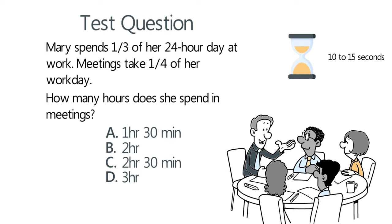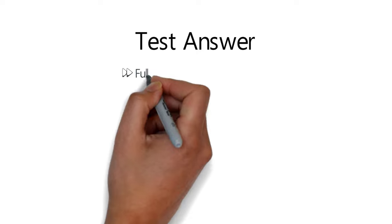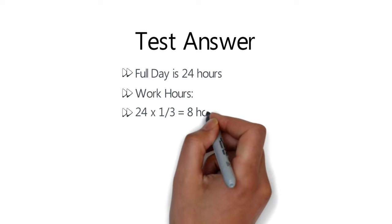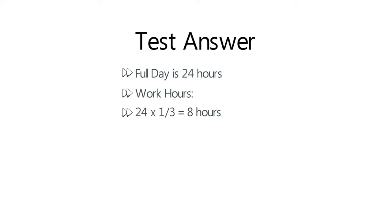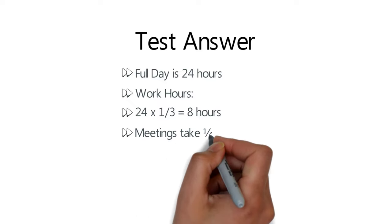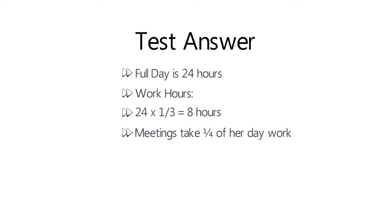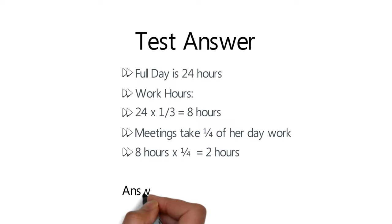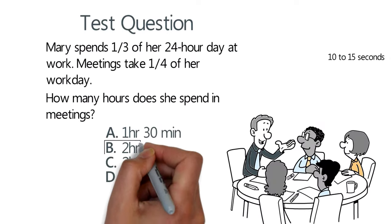A full day has 24 hours. Mary's working hours are one-third of that: 24 ÷ 3 = 8 hours. Meetings take one-fourth of her work day: 8 × 1/4 = 2 hours. The correct answer is choice B: two hours.